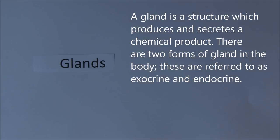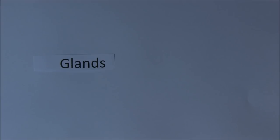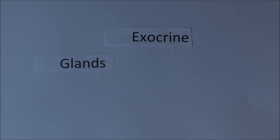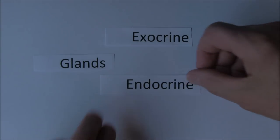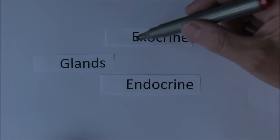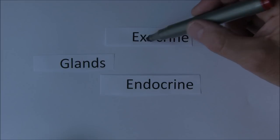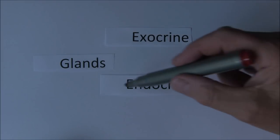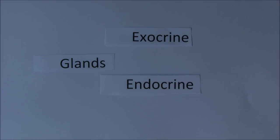In the body we have glands, and a gland is a cell or a structure that produces a product. There are only two types of gland in the body: exocrine and endocrine. Exo means out, as in exit, and endo means in, as in endocardium, the inner layer.